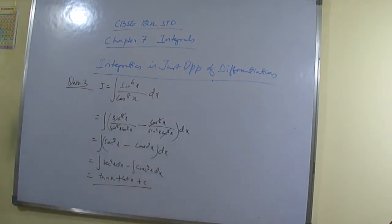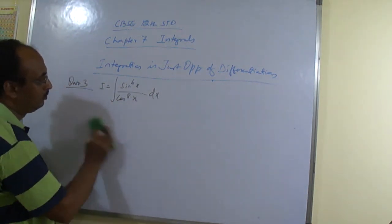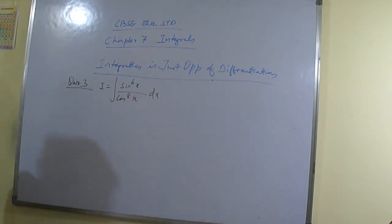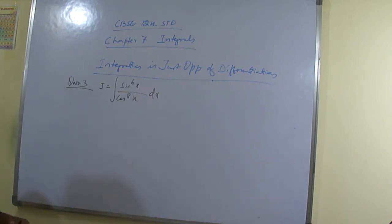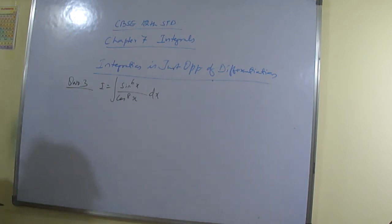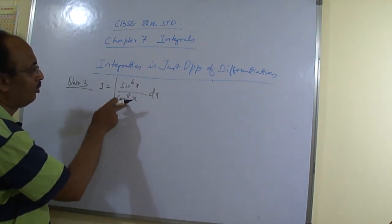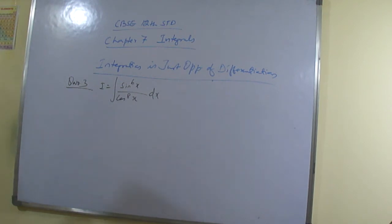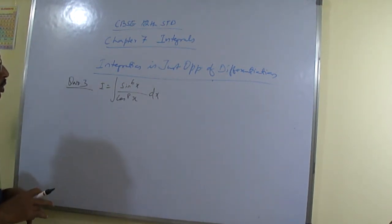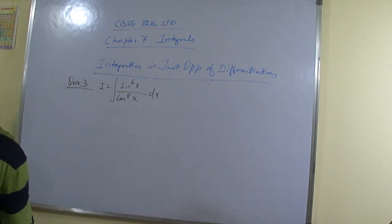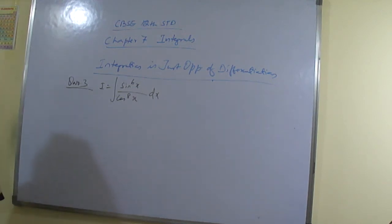So in this, what is to be done? How will you go for substitution? We have sin⁶x in the numerator and cos⁸x in the denominator. We could separate cos⁸x as cos⁶x divided by cos²x, which would give us tan⁶x.